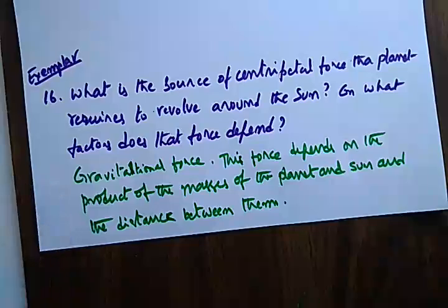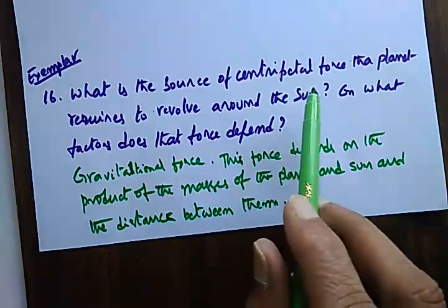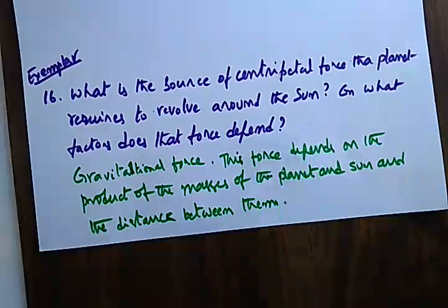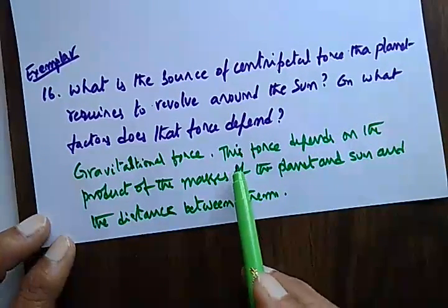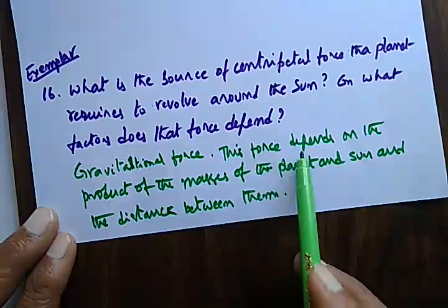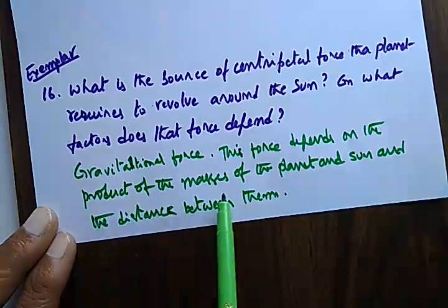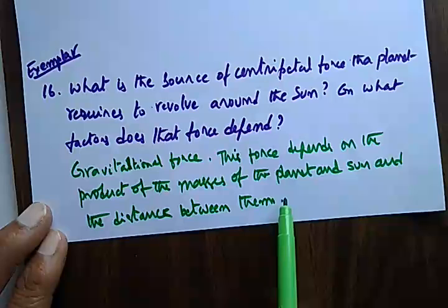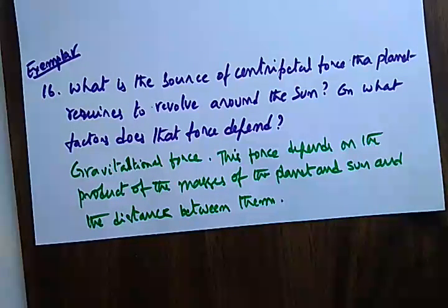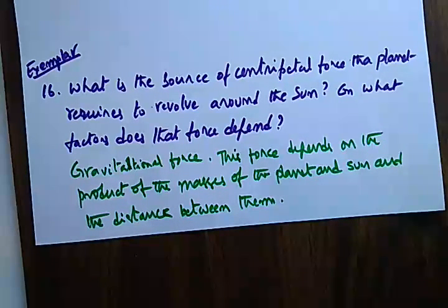This force depends on the product of the masses of the planet and the Sun and the distance between them — we will study this in the next class. In this class, we understood that there is a gravitational force of attraction between any two objects in the universe, and the forces are the same regardless of the size of the masses, while the accelerations will be different.